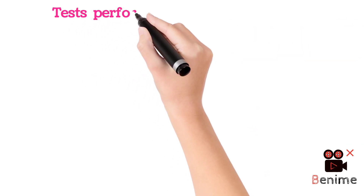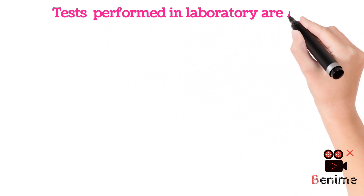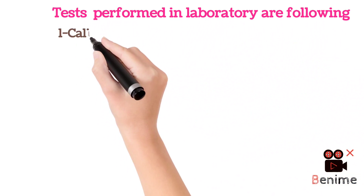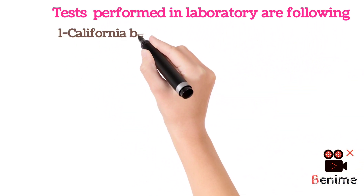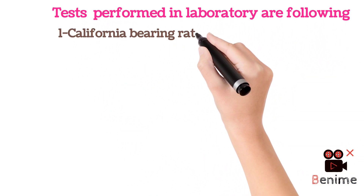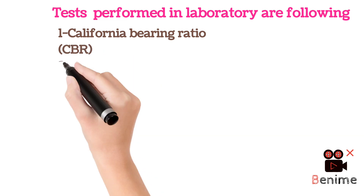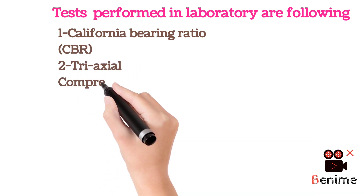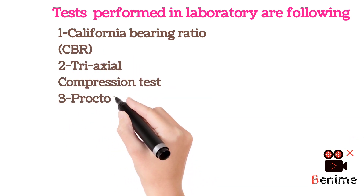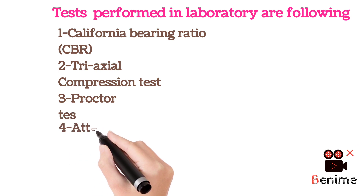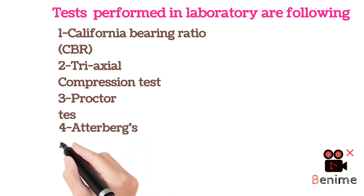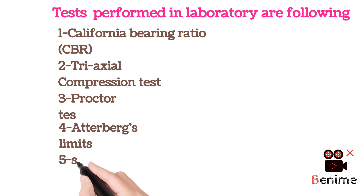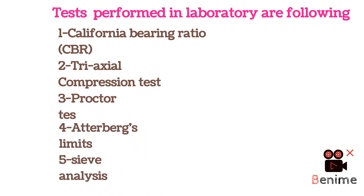Tests performed in the laboratory are the following: one, California bearing ratio (CBR); two, triaxial compression test; three, Proctor test; four, Atterberg's limits; five, sieve analysis.